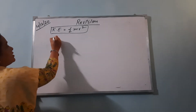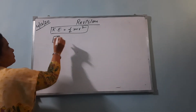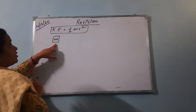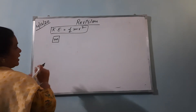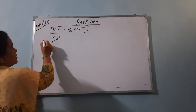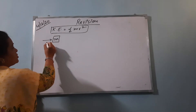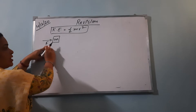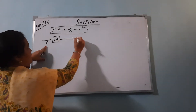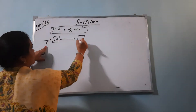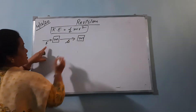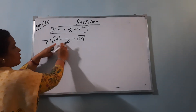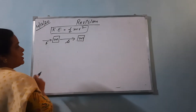For that, consider a body of mass m. A force F is applied on it. When we apply the force on it, it will displace through a distance s. By applying this force, the body will displace through a distance s.